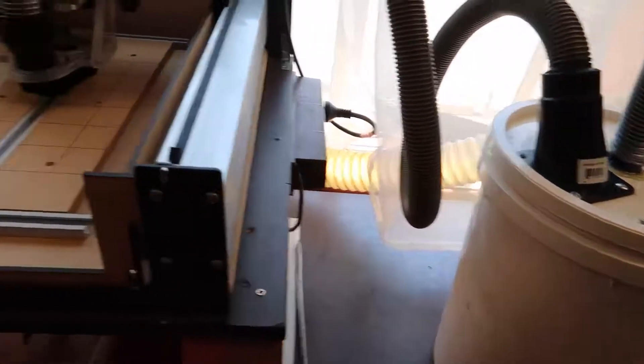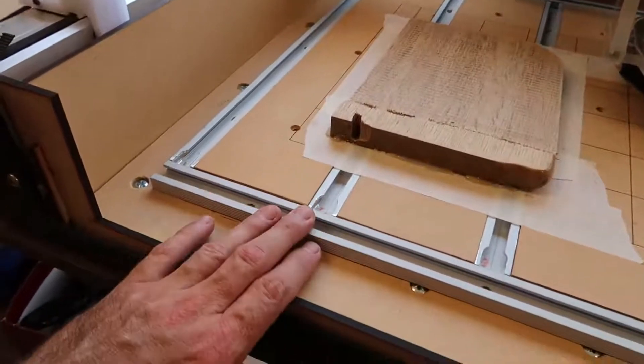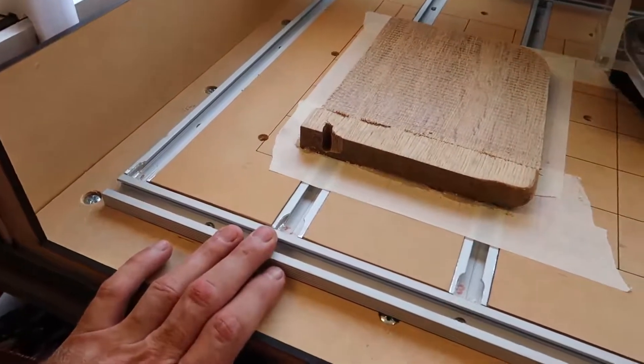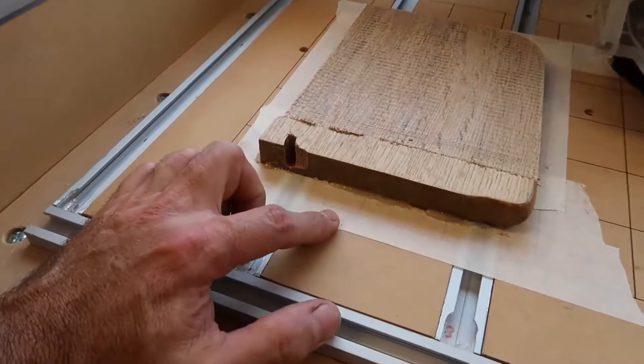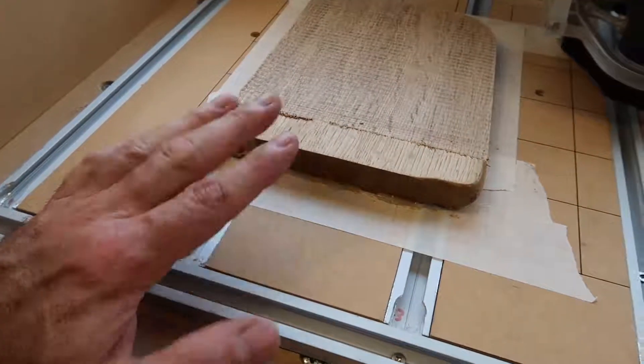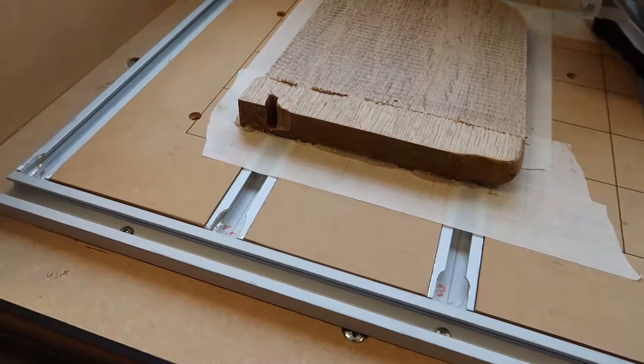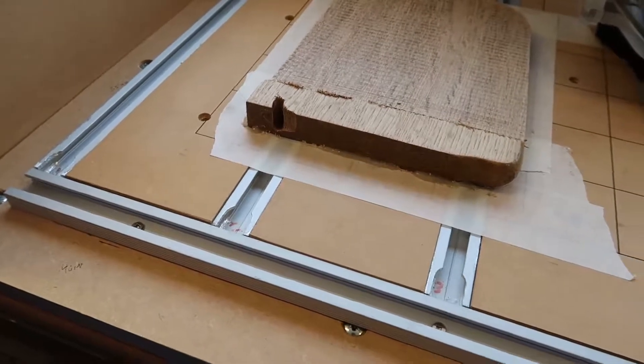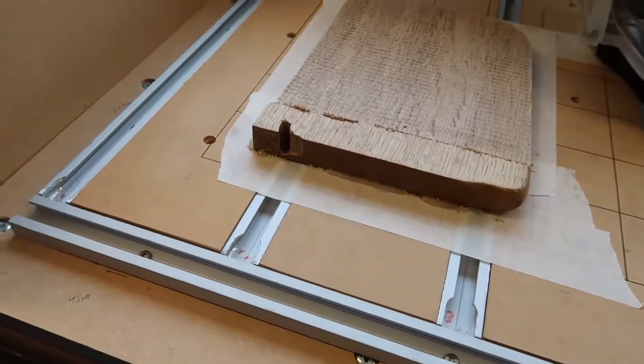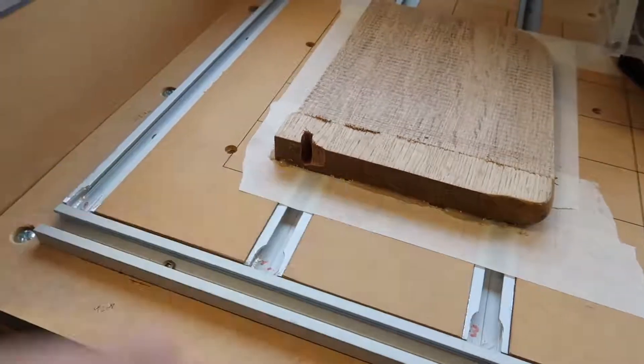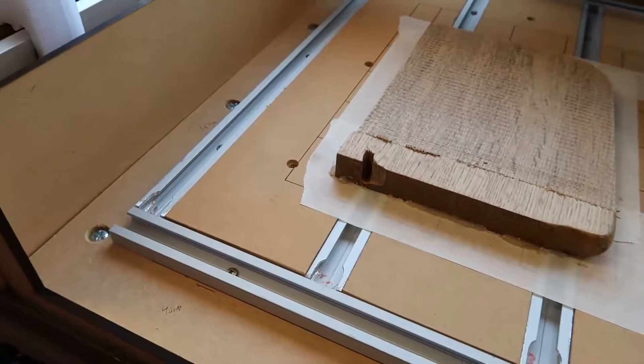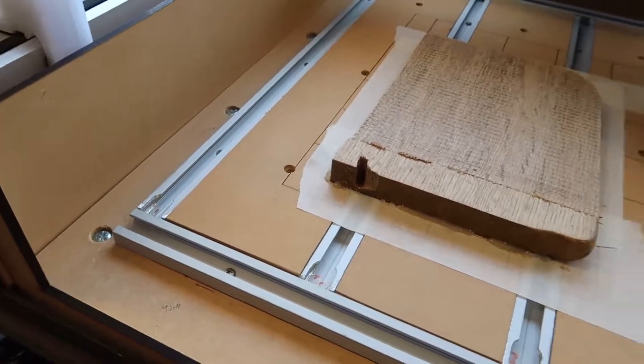I don't really use the rails that much, although I have got them there. I find putting a piece of masking tape down stuck to the waste board with a bit of hot glue works really well, and I just peel the tape off. Other than having a bit of hot glue on the wood, it holds it down very nicely indeed.